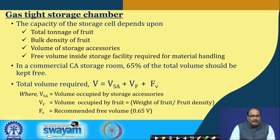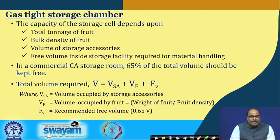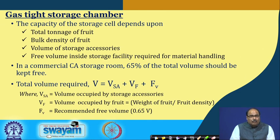The other system is the gas-tight storage chamber. The capacity of the storage chamber will depend upon the tonnage of the fruit — that is, what is the quantity of the fruit or quantity of other food materials required to be kept — the bulk density of the food, and the volume of the storage accessories and free volume inside the storage facility required for material handling.